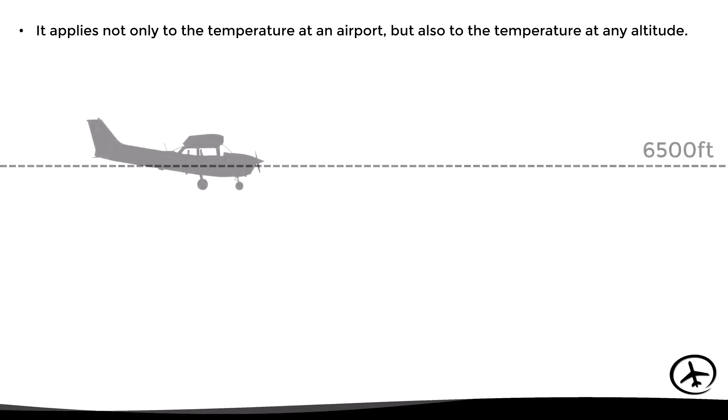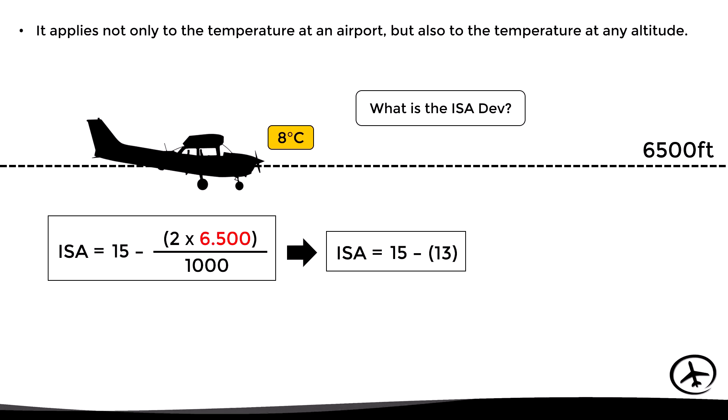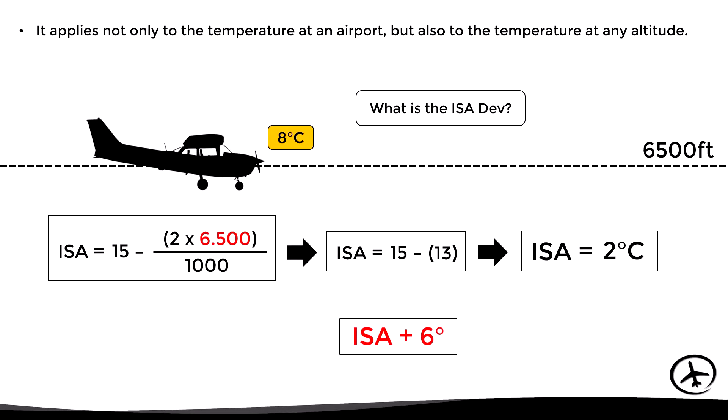This concept does not only apply to airport elevations, but also to any other altitude or level. For example, let's say an aircraft is flying at 6500 feet and the pilot reads on his instruments that the outside air temperature is 8 degrees Celsius. In this case, what is the current ISA deviation? First of all, we must determine the standard temperature at 6500 feet. By applying the formula we obtain 2 degrees Celsius. If we then compare the actual conditions of 8 degrees with the standard of 2 degrees, we obtain an ISA deviation of plus 6 degrees. This information can be useful to the pilot as it allows him or her to make accurate aircraft performance calculations.